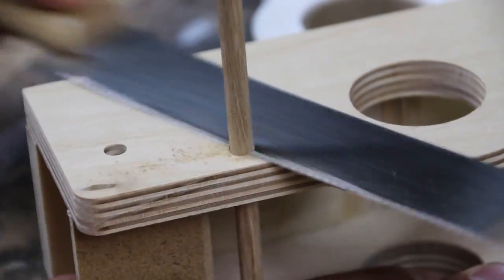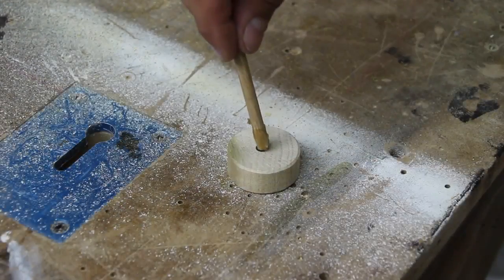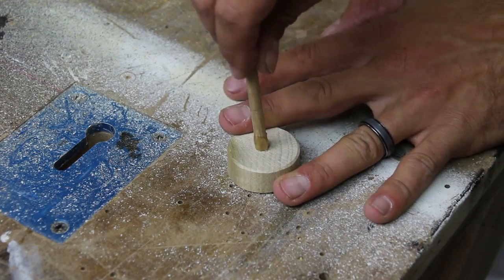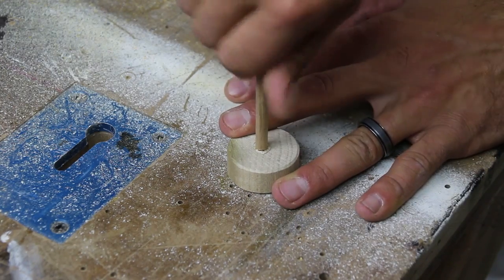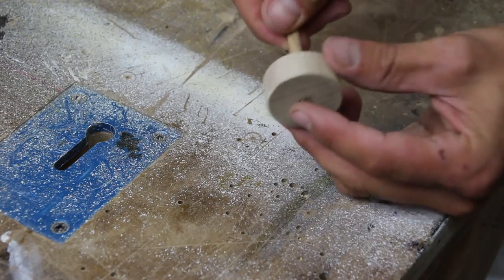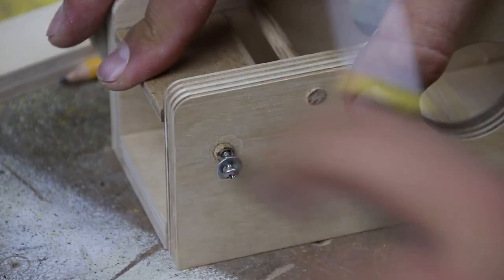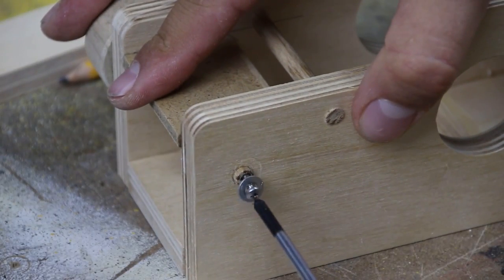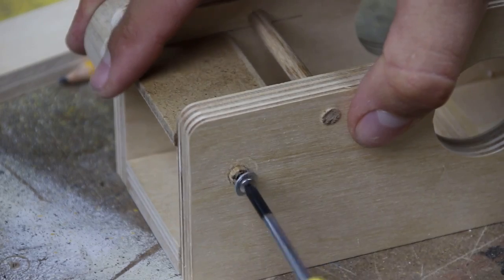I used my flush trim saw to cut the dowel flush to the sides. For the second hole in the side, I glue up a 1.5 inch section of the large dowel stock to the end of a 1.25 inch dowel rod. This will be used to roll up the excess backing when stickers are loaded into the dispenser.